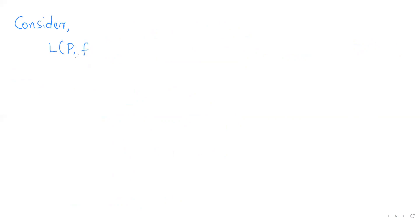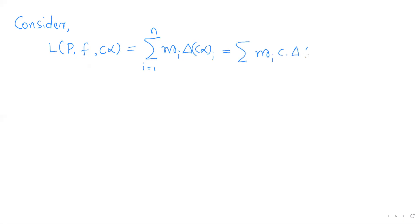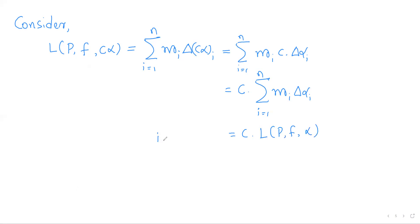Consider the lower Riemann-Stieltjes sum of f with respect to the monotonically increasing function cα. It is defined as Σ mᵢ · Δ(cα)ᵢ. Since Δ(cα)ᵢ = c · Δαᵢ, and c is constant, we can take it outside the summation: c · Σ mᵢ · Δαᵢ = c · L(P, f, α). So L(P, f, cα) = c · L(P, f, α). Call this Equation 1.